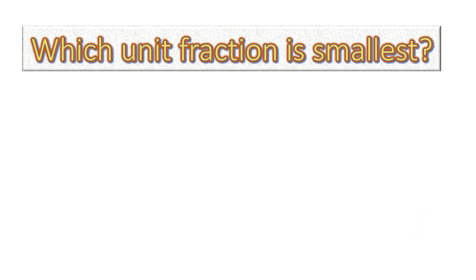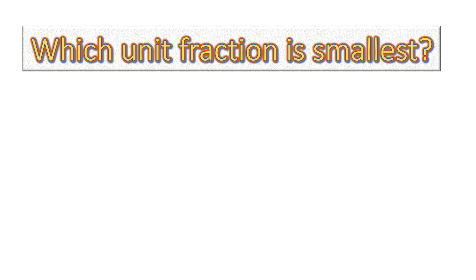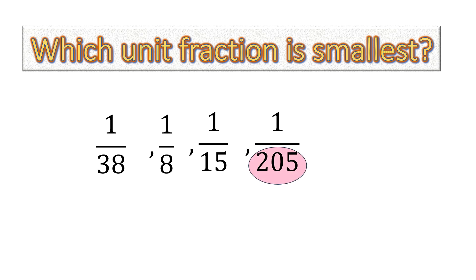Now which unit fraction is the smallest? 1 over 38, 1 over 8, 1 over 15, 1 over 205. See, 205 is the largest denominator, so we can definitely say 1 over 205 is the smallest fraction. We are dividing one whole thing into 205 parts, so each part will be the smallest of all the others.